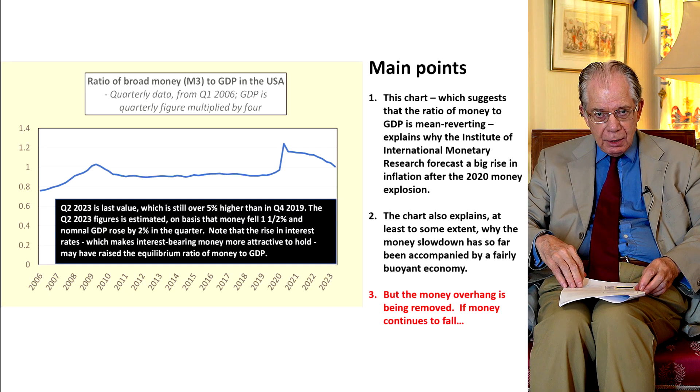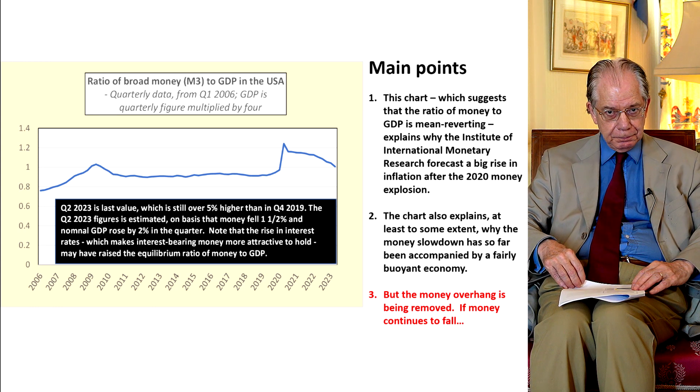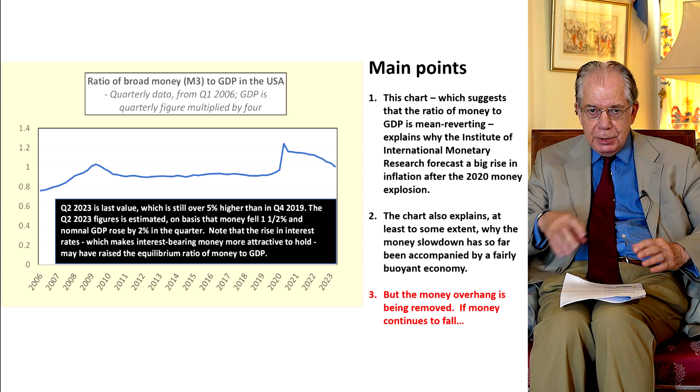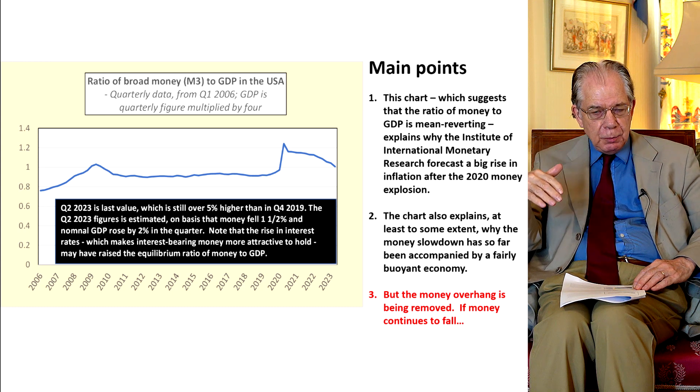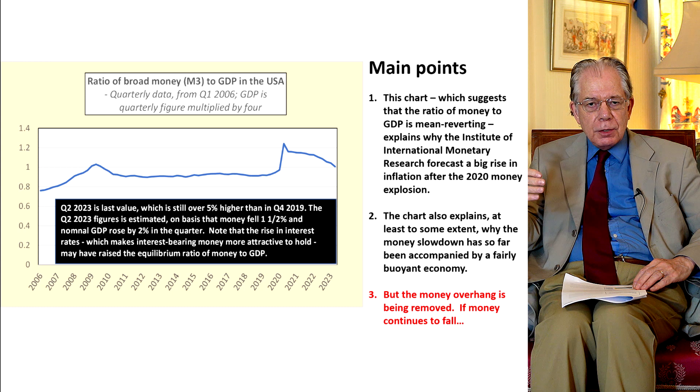Forecasts of a recession so far have been premature. One of the reasons is that the money explosion of 2021 was so extreme that people and companies had excess money balances even through into last year — strong balance sheets. Asset prices have been falling a little bit but are still very high because of what had happened in the previous year or two. What's happening now is that persisting rather high inflation is causing nominal incomes to rise. Money is contracting, so the ratio of money to GDP is going down, and the monetary overhang is being removed.